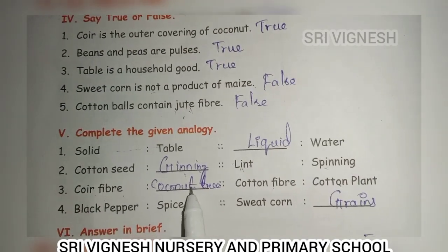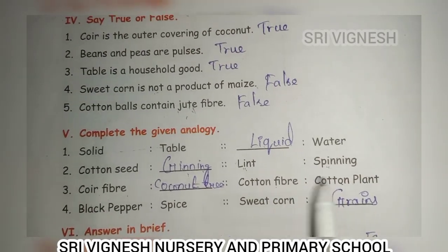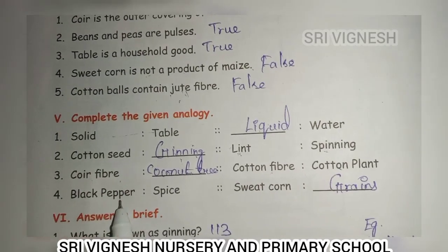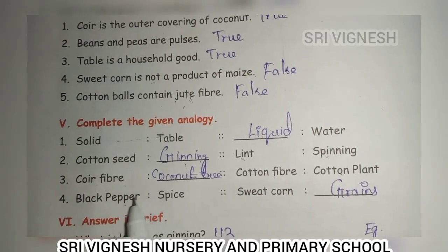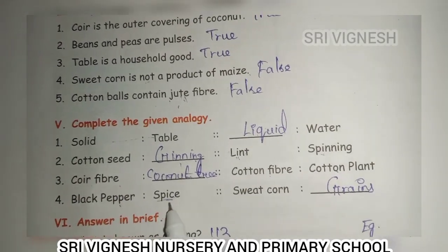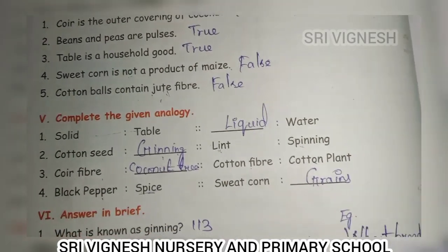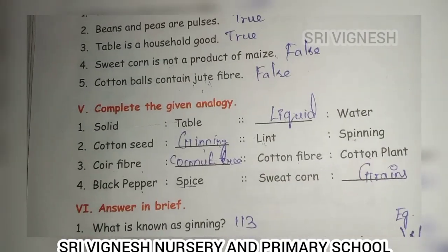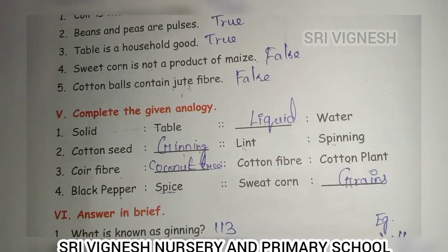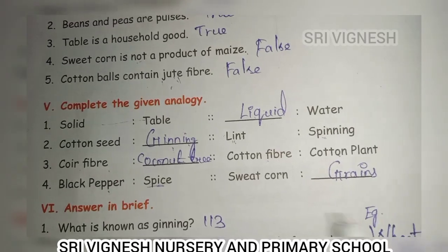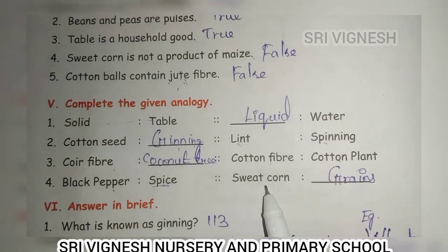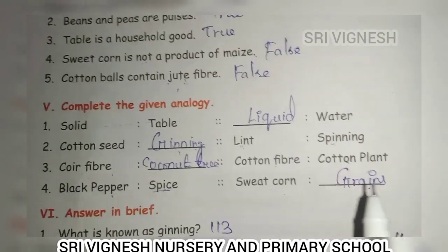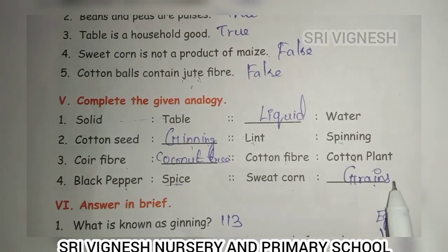Black pepper — so it's a spice, we can use it as a spice. It's not sweet. Sweet corn — it's grains, so let's put grains.